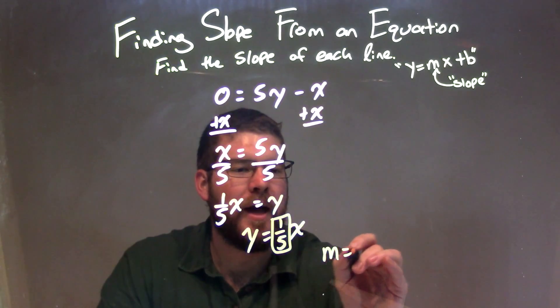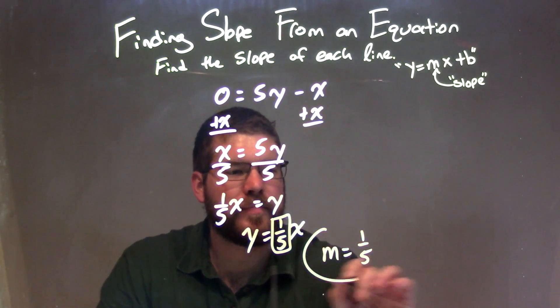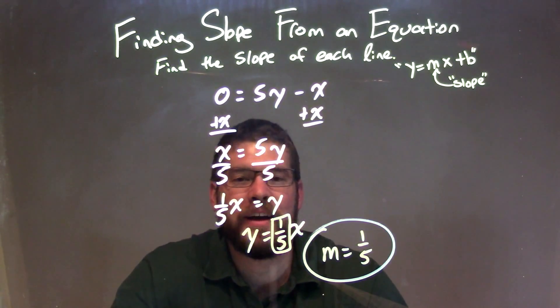It's the coefficient in front of x, so m equals a positive 1/5. There we have it, that is our slope.